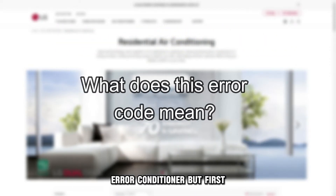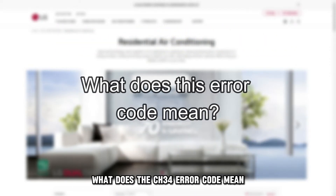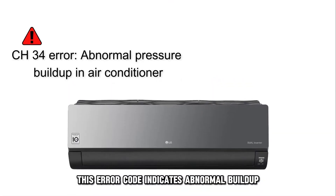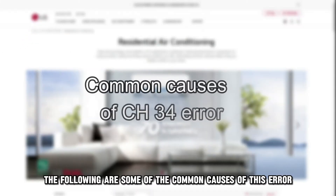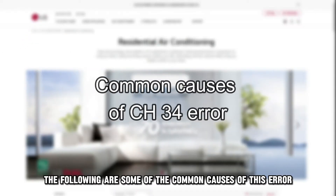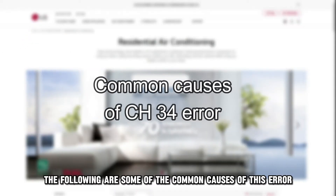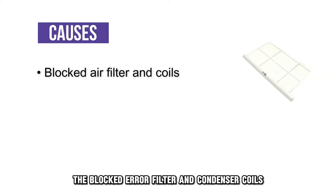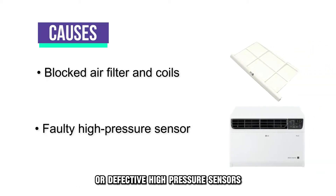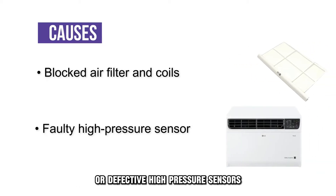But first, what does the CH34 error code mean? This error code indicates abnormal build-up pressure in the air conditioner. The following are some of the common causes: a blocked air filter and condenser coils, or defective high-pressure sensors.